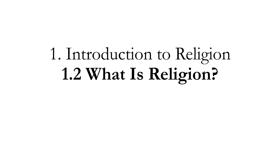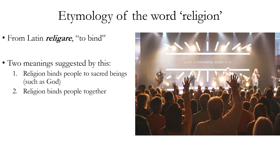In this section we're going to talk about the definition of religion. We can begin by looking at the etymology of the word. The English word religion comes from Latin religare, which means to bind or bind back together — the ligare portion is related to the English word ligament. Two meanings are suggested: religion binding people to God or sacred beings, and religion binding people together. A word of warning: even if you know the history of the word, etymology can be useful in understanding meaning, but it's not going to be definitive on its own.